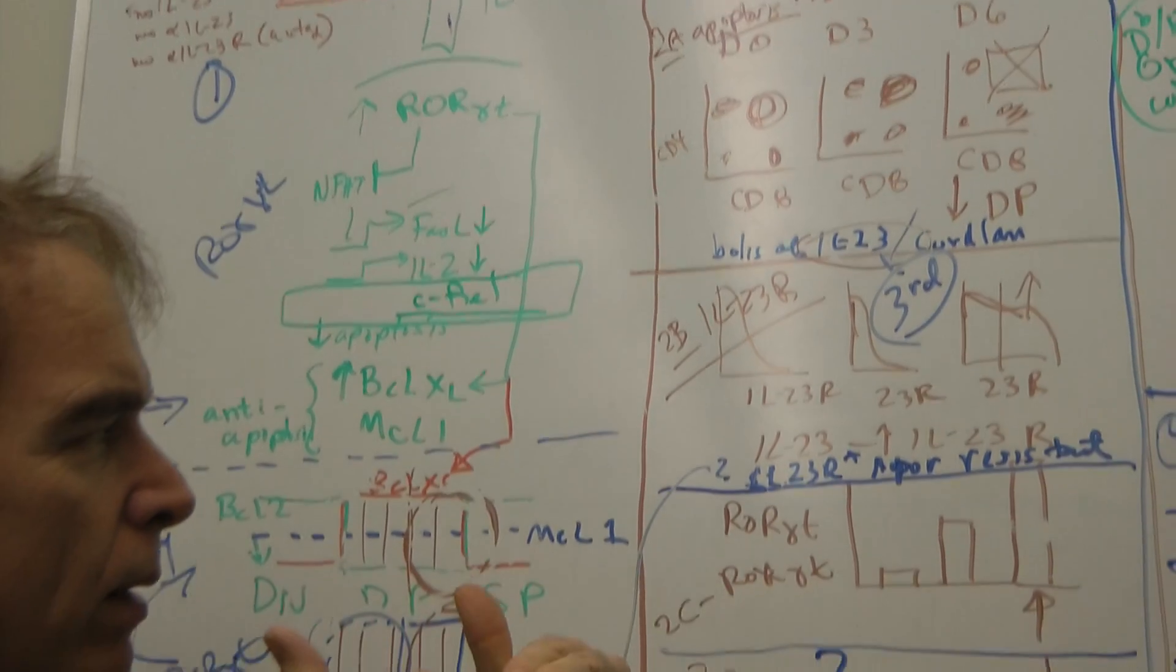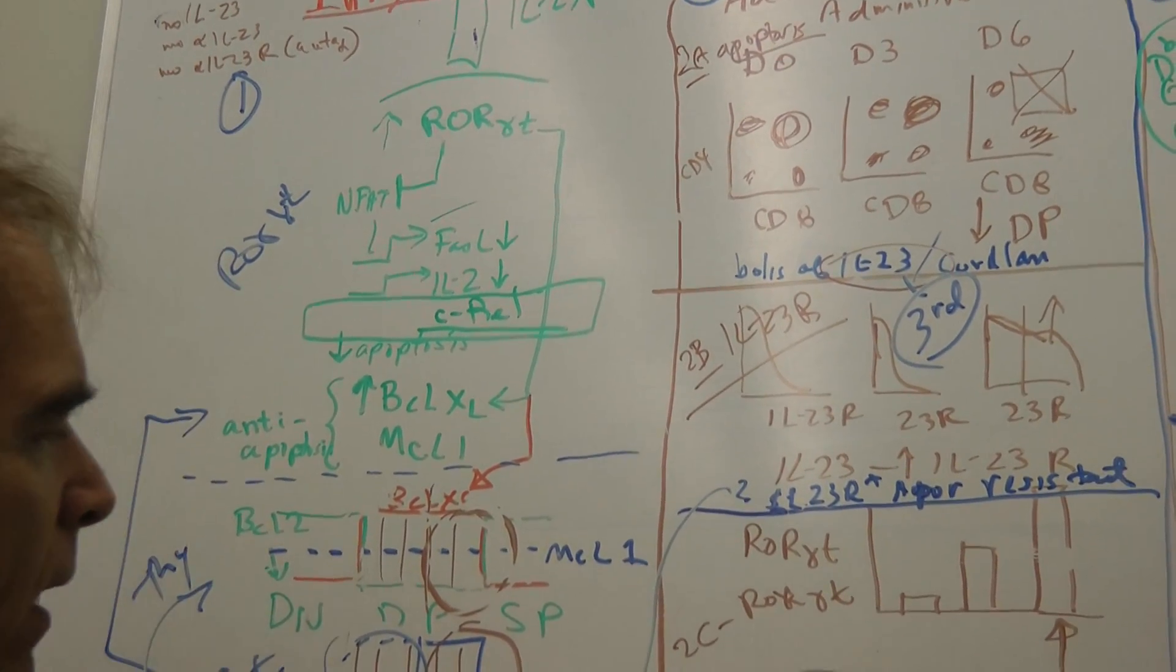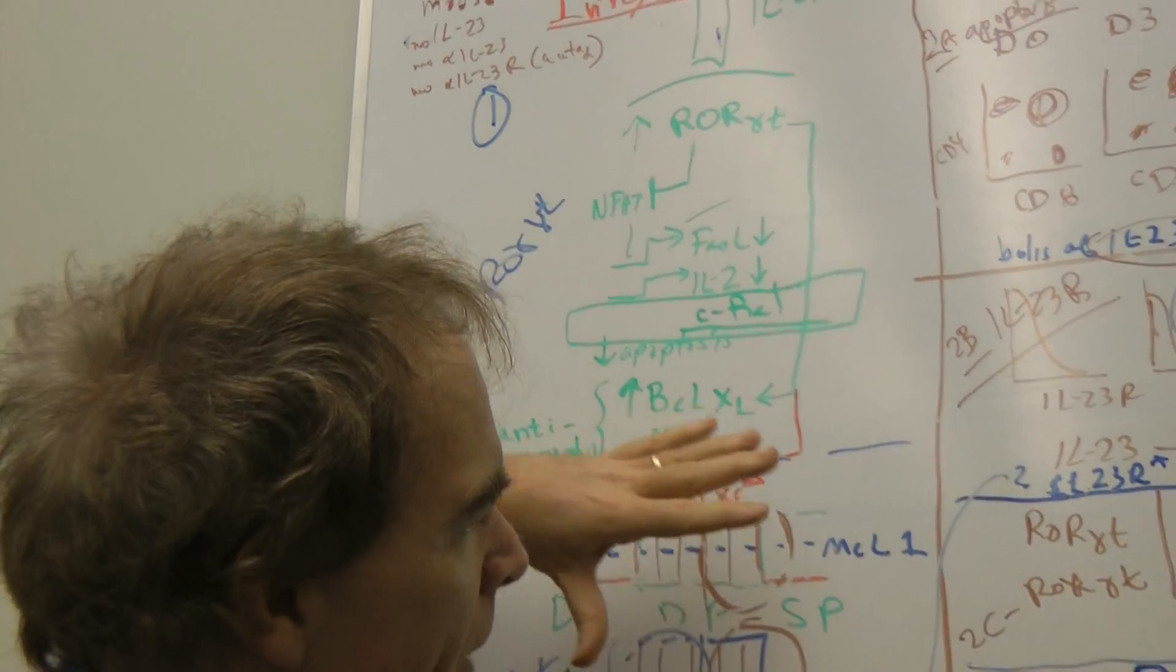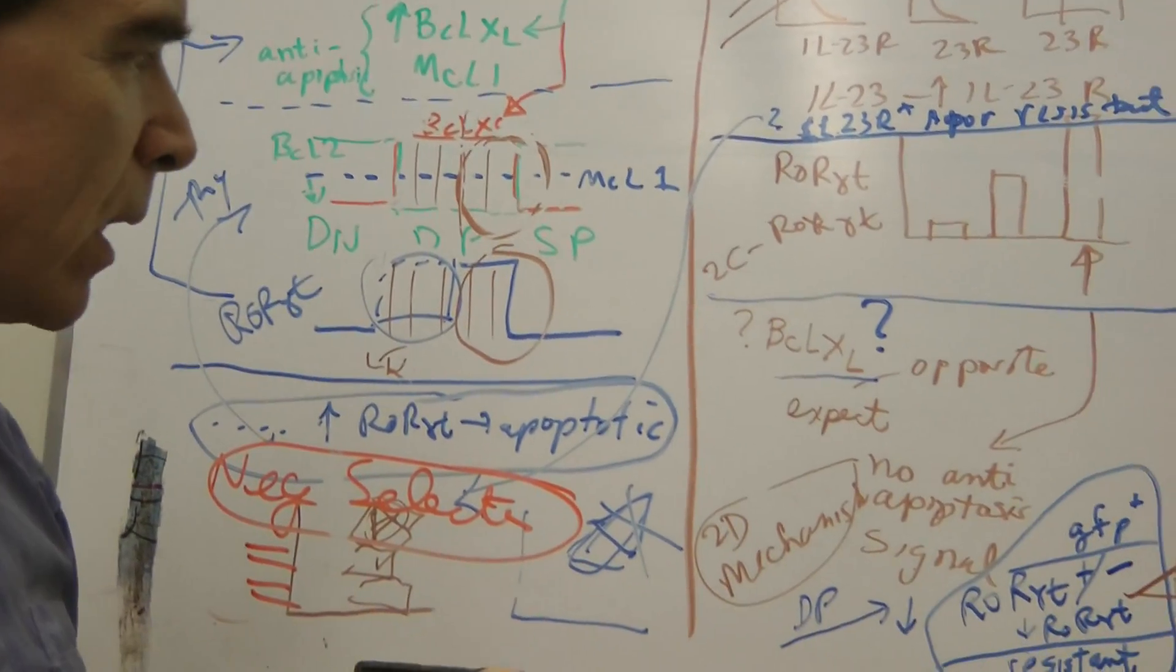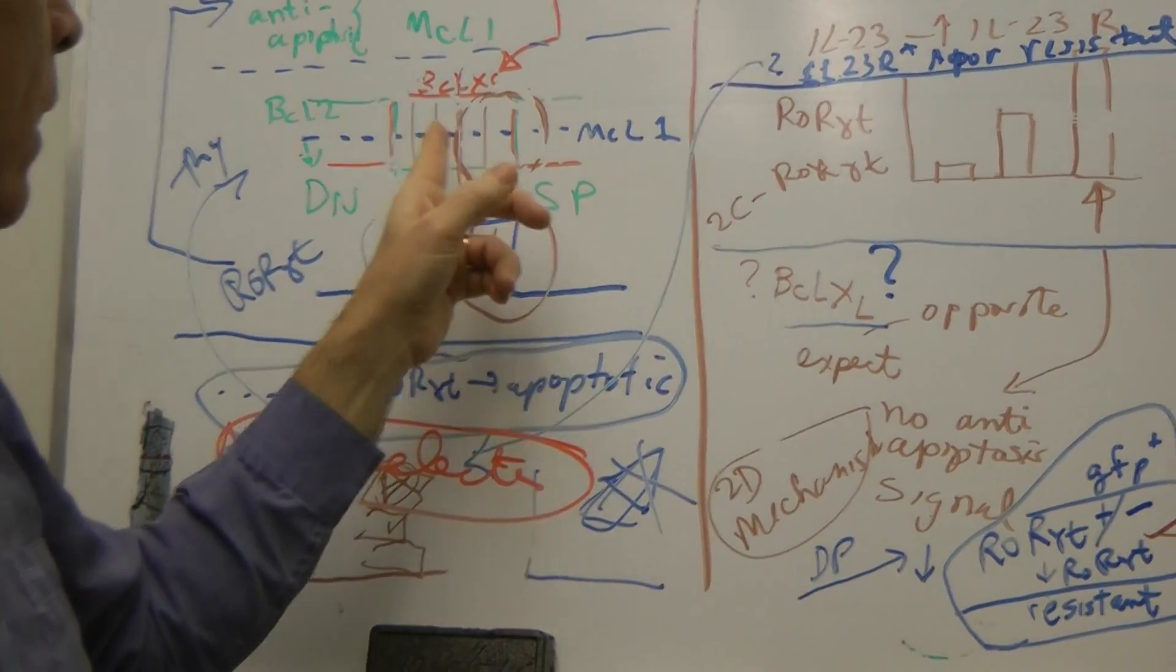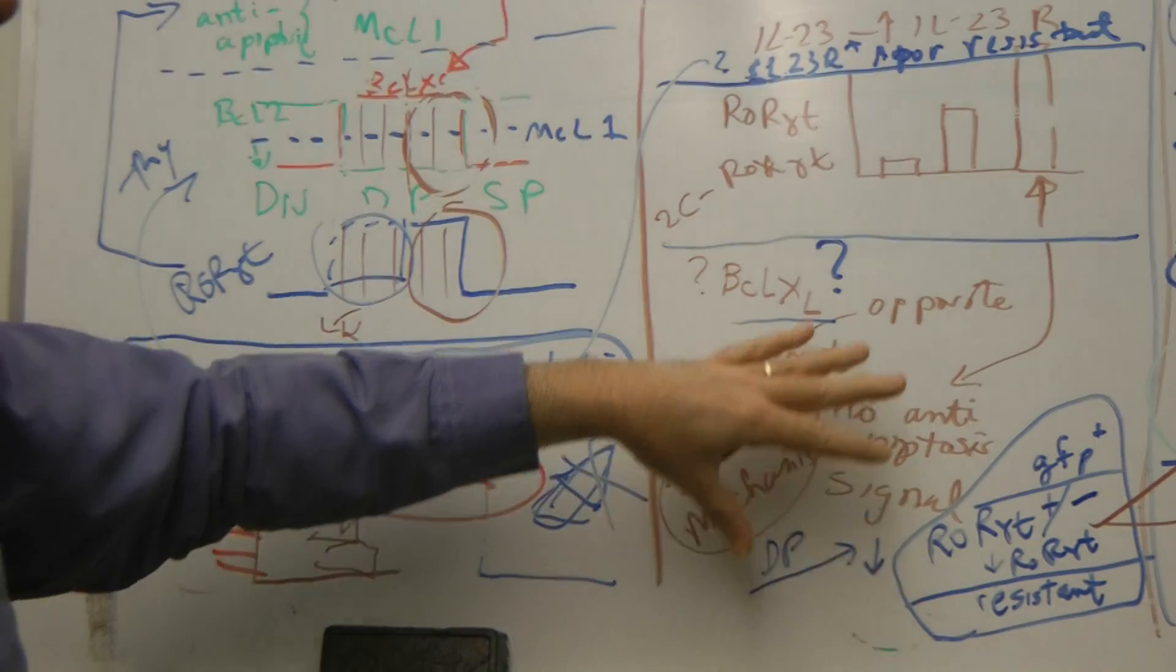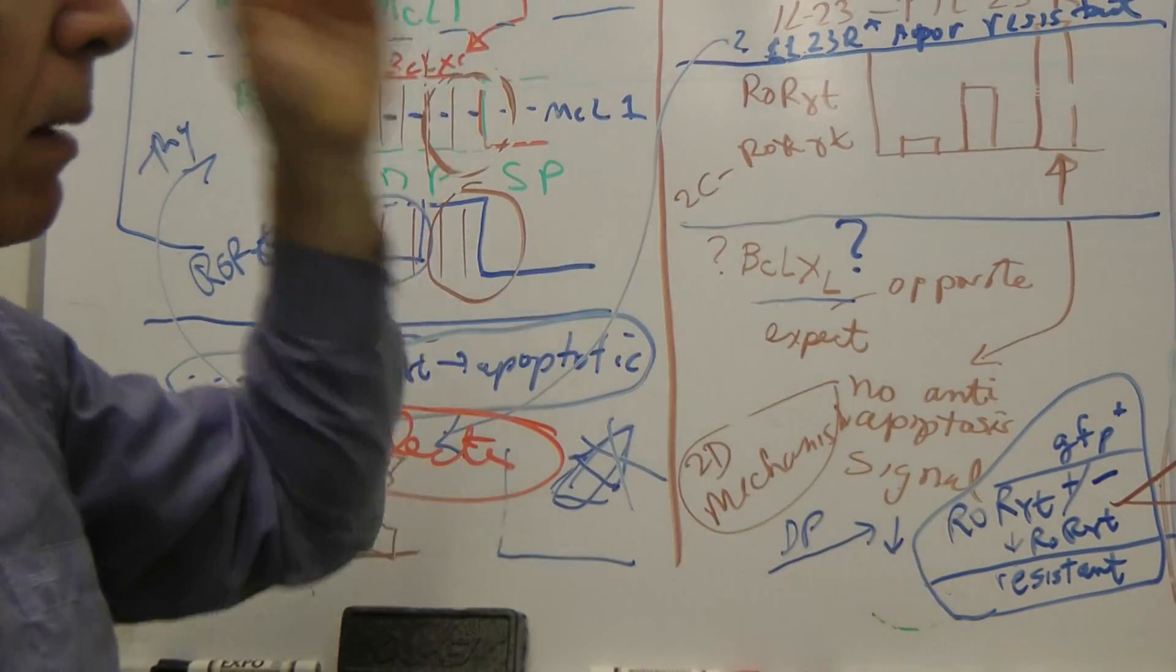So you see the three things. Apoptosis, and then IL-23 receptor and ROR gamma T, and then finally the mechanism. You see how that relates back here to the introduction. What's the mechanism of apoptosis? And that's what we don't know. What's different about this? Is it BCL-XL high or low? So that's a no.